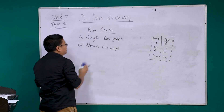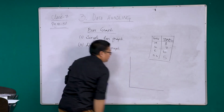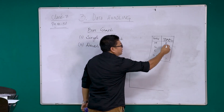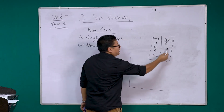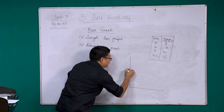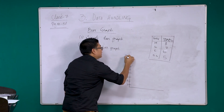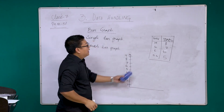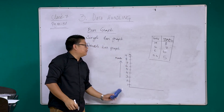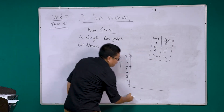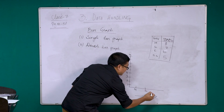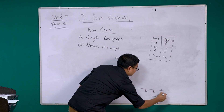For a single bar graph, we draw the x-axis and y-axis. On the vertical axis we represent marks, counting from 1 up to 9 since 8 is the highest. On the horizontal axis we represent subjects: Maths, Science, English, and Social Science. For Maths the bar goes up to 8, for Science to 7, for English to 6, and for SS to 5.